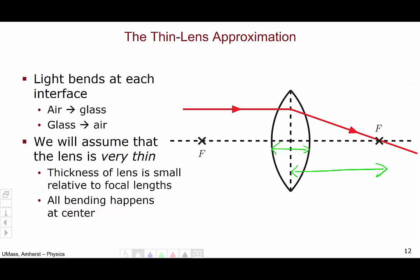Under this approximation, it's essentially as if all the light bending happens at the center. Now, this is not what actually happens. Remember, the light does bend at each interface, air to glass, and glass to air. However, if the lens is very thin, these two interfaces are so close together and so close to the center of the lens that we can ignore it.